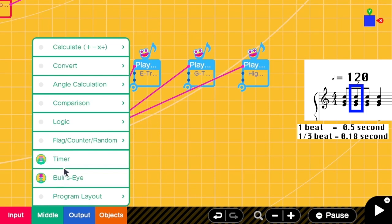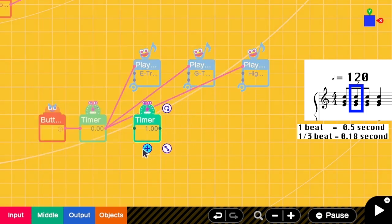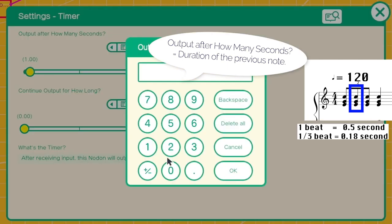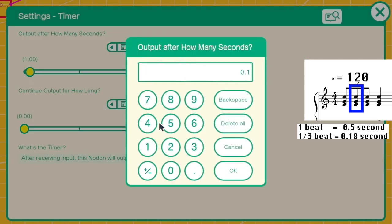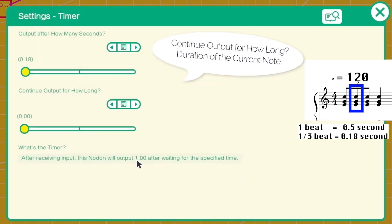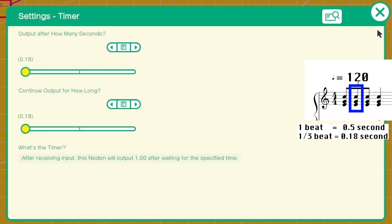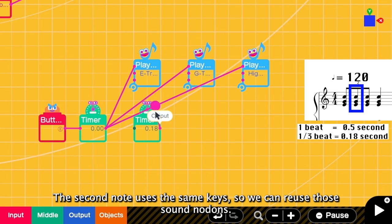We have to delay the timer by the duration of the previous note, which is 0.18. And this note also has the same beat as the first one. So we also use this as 0.18. And it also uses the same keys. So we can reuse them.